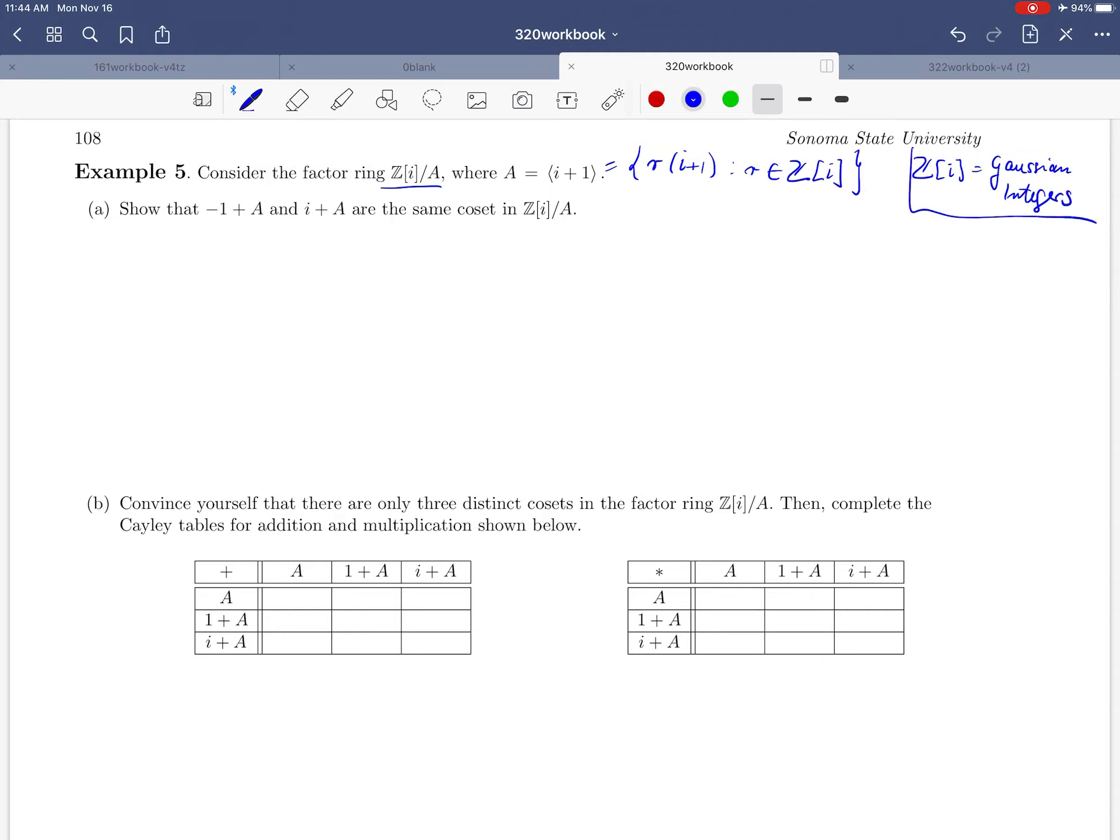In part a we are asked to show that the coset minus 1 plus A and the coset i plus A are the same in Z-adjoint i mod A. How do we show that?